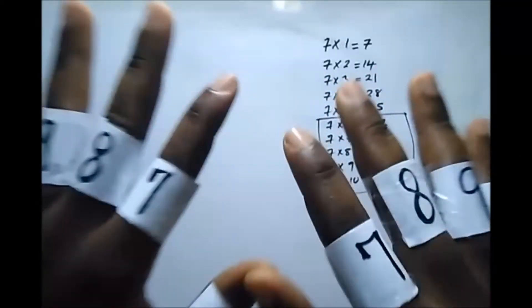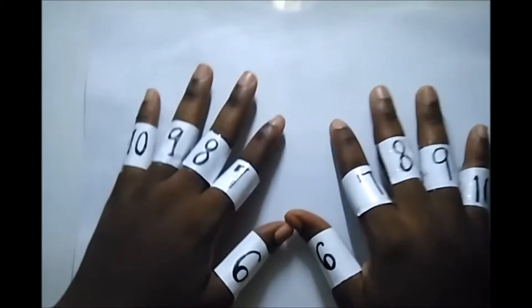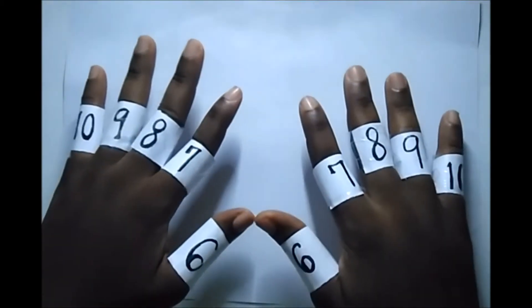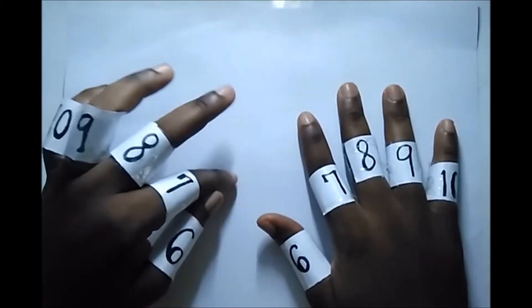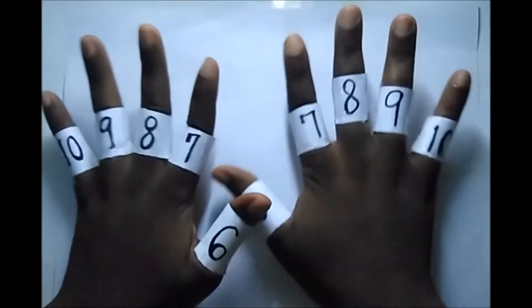How do we do this? Let me flip this over. Let's say for instance, let's take an example. Let's say we want to do eight times nine. What do you do? This is the finger trick.